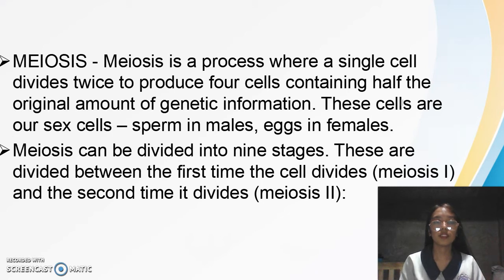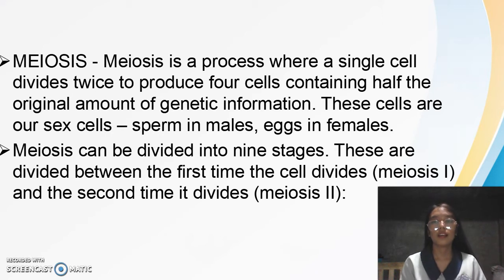Meiosis is a process by which a single cell divides to produce four cells containing half the original amount of genetic information. These cells are our sex cells — sperm in males and eggs in females.